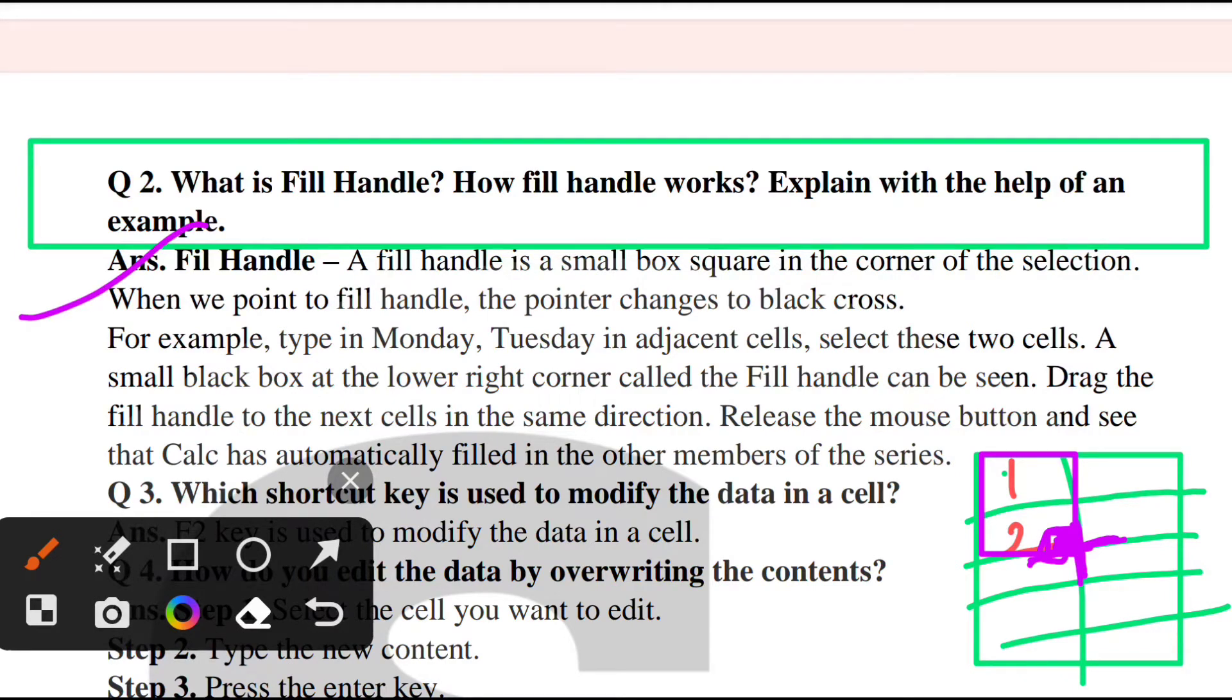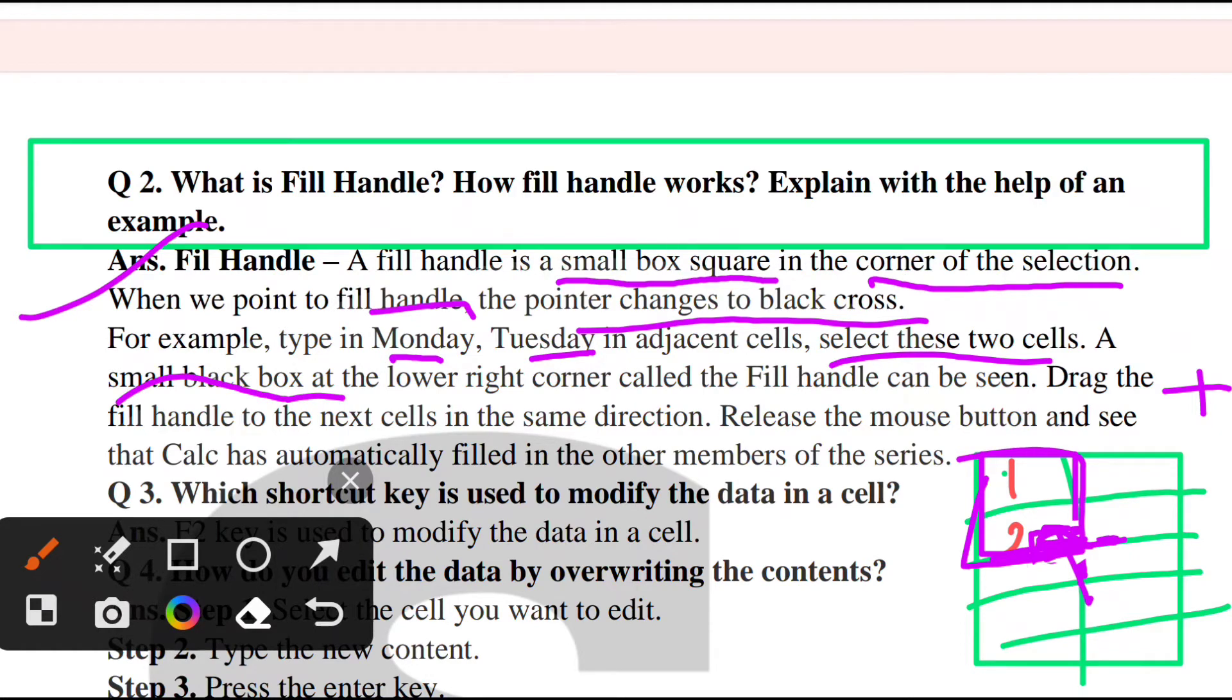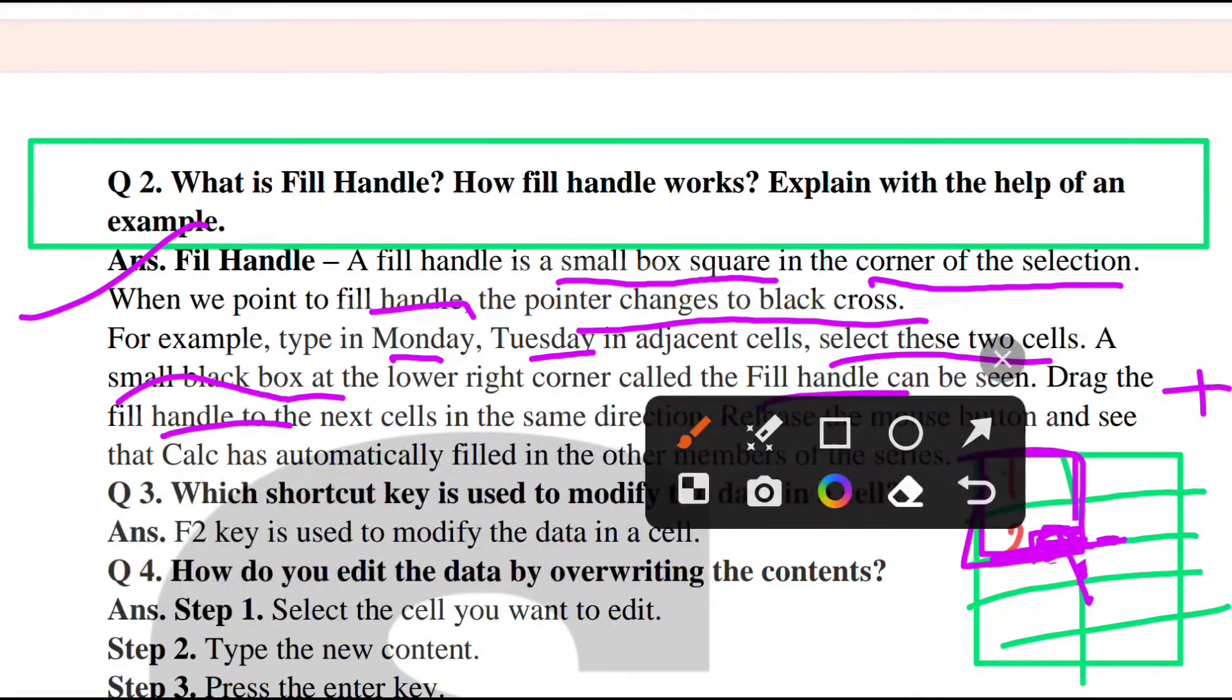This is called Fill Handle. See the definition: A Fill Handle is a small box square in the corner of the selection. When we point to Fill Handle, the pointer changes to a black cross. For example, you write Monday, Tuesday. When you select these two cells, a small box appears at the lower right corner. This is called Fill Handle. Drag it and release the mouse button to fill the values.